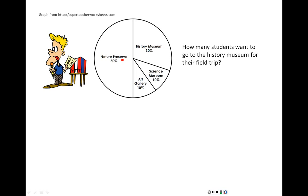This works great in this particular case. In this problem, let's go ahead and see some of the things that they might ask you to do. The question is asking us how many students want to go to the History Museum for their field trip. Let's look at what the pie chart tells us. Look around for the History Museum — it's right here — and we see this value right here, and we know that 30% of the students would like to go to the History Museum.